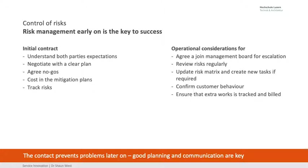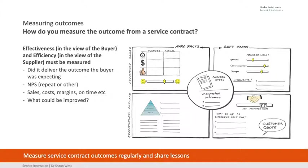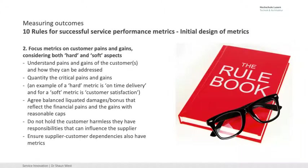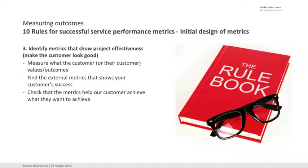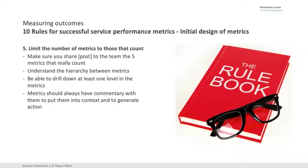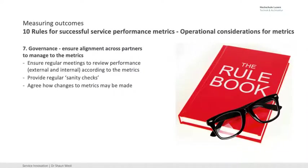So a quick look at some service contracts. Risk management is very important early on — too late if you've already got the contract. Outcomes: how do you know the outcome from a service contract? How do we do it well? What do we measure? We need a rule book. We need to understand the rules for listing out the soft and the hard metrics. We have internal metrics to ensure project efficiency, but is that enough? Don't have too many. Agree on initial targets for external metrics, get on with it, and accept that you may be wrong. That's where governance helps — then you can change them.